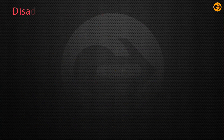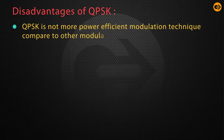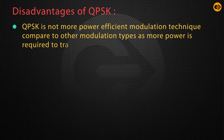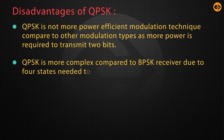Now let us discuss the disadvantages of QPSK. QPSK is not a more power-efficient modulation technique compared to other modulation types, as more power is required to transmit two bits. QPSK is also more complex compared to BPSK receivers due to the four states needed to recover the binary data information.